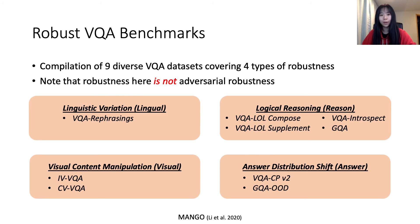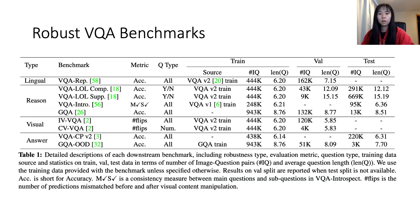The four robustness types are: linguistic variation, logical reasoning, visual content manipulation, and answer distribution shift. Note that here robustness is not adversarial robustness. This table summarizes detailed descriptions of each downstream benchmark, including robustness type, evaluation metric, question type, training data source, and statistics. We hope this compilation serves as a unified yardstick for evaluating VL model robustness and a guidance for future study on robust model design.